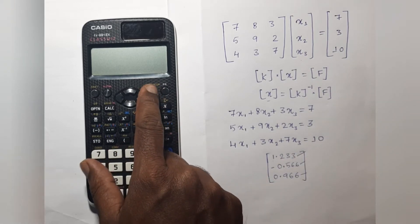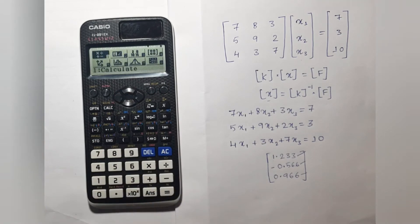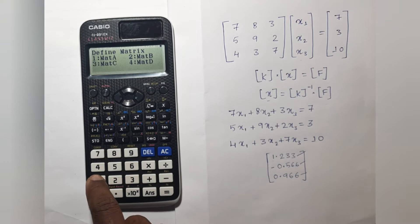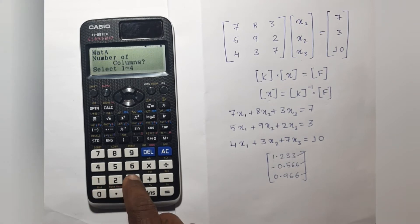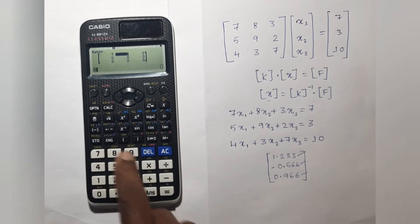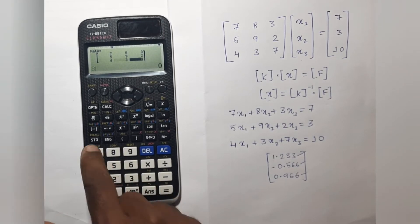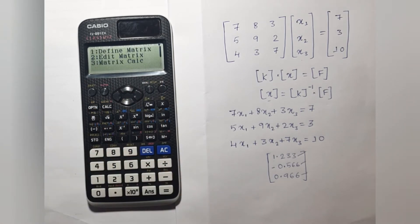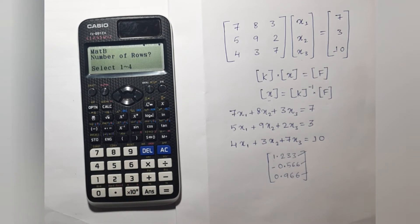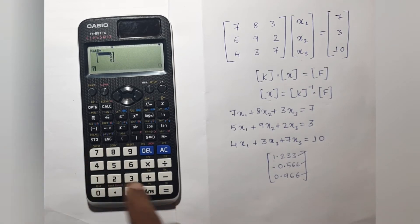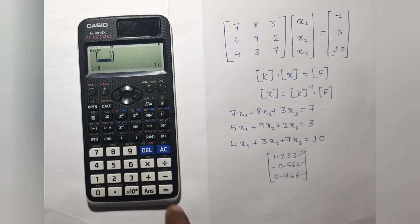Now let us see how to solve it. Go to the menu, select Matrix, then define matrix A, which has three columns and three rows. Enter all the values of matrix A. Then go to options and define matrix B, which has three rows and one column. Enter the values 7, 3, and 10.